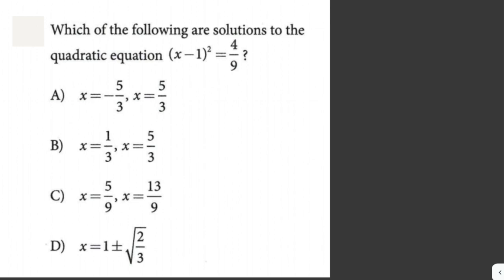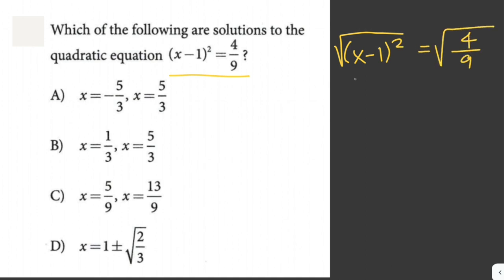Which of the following are solutions to the quadratic equation (x minus 1) squared equals 4 over 9? To solve for x, we square root both sides. The square root of (x minus 1) squared equals the square root of 4 over 9, giving x minus 1 equals plus or minus 2 over 3.